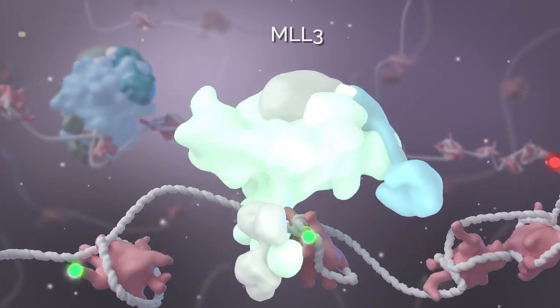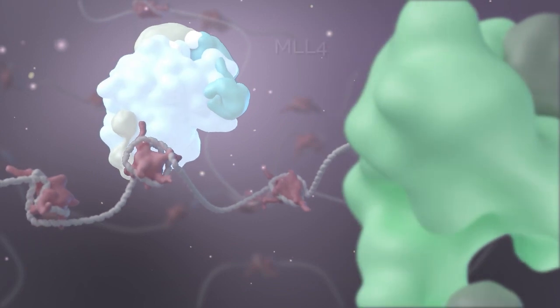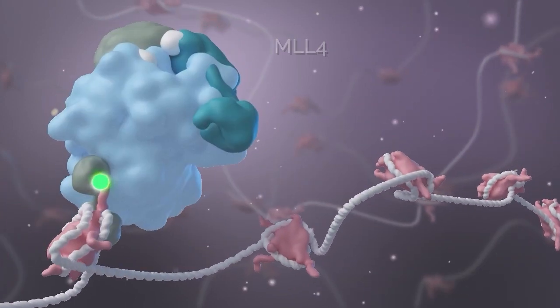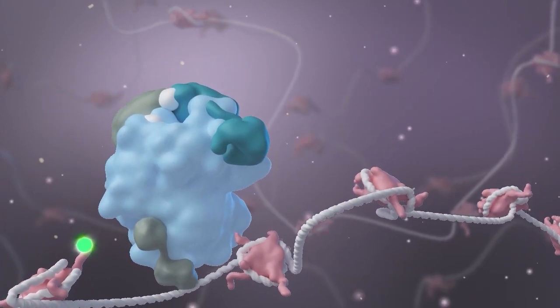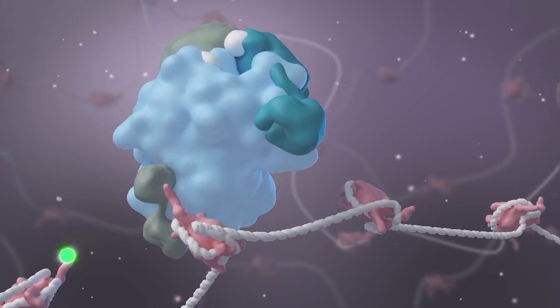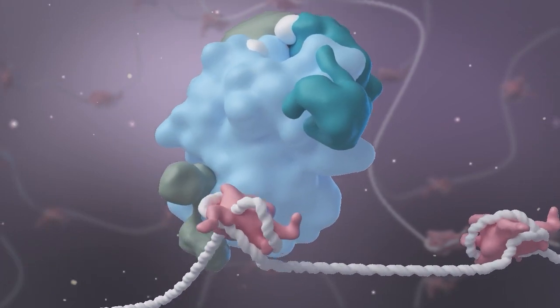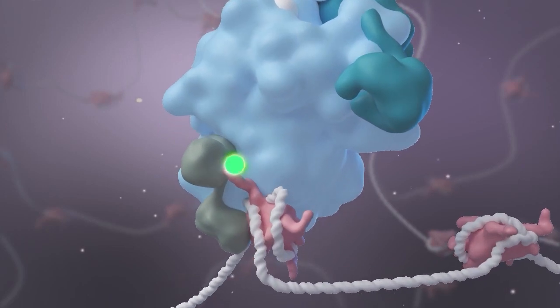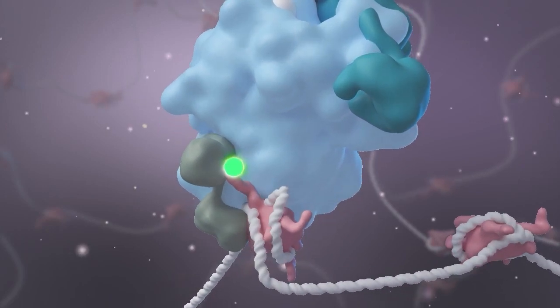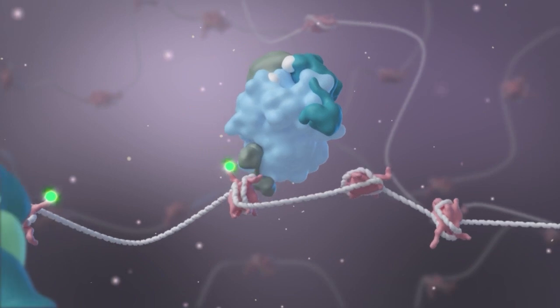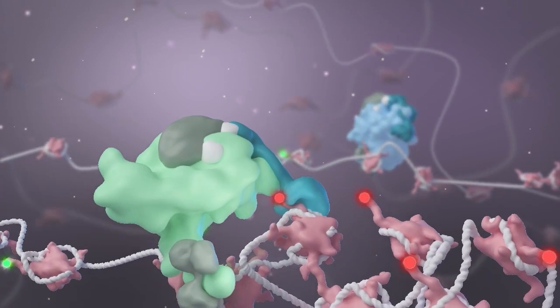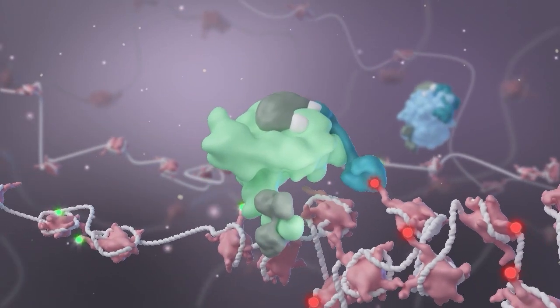From the COMPASS family of proteins, MLL3 and MLL4 are the major histone H3K4 monomethyltransferases, catalyzing the methylation of lysine 4 on histone H3. MLL3 and MLL4 branches of the COMPASS family are essential for a variety of developmental processes.